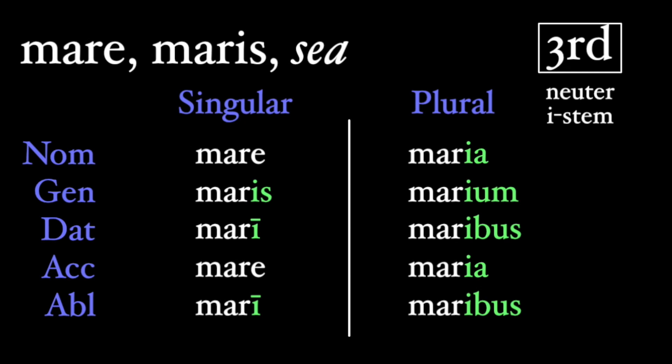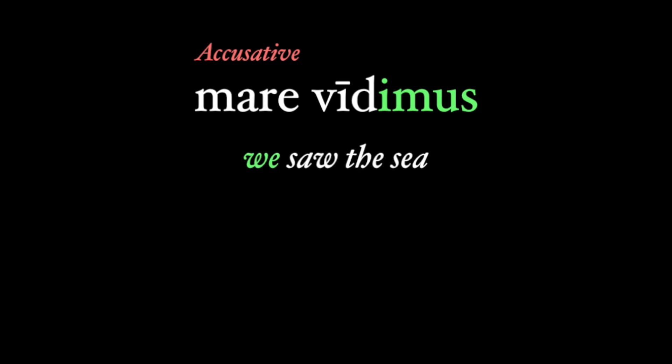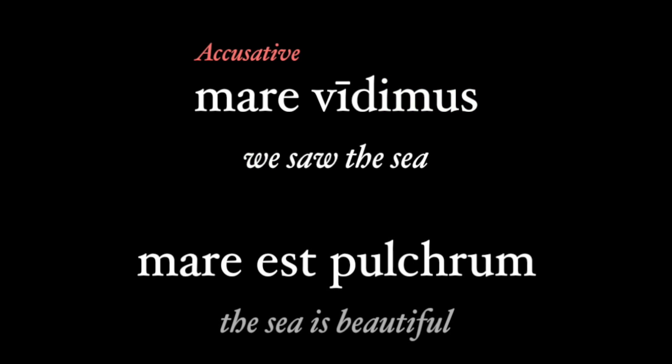Like all neuters, you might have some problems identifying whether the noun is the subject or the object. In the sentence 'mare vidimus,' mare looks so tempting as a nominative, but here it's the accusative, since vidimus is first-person plural — 'we saw the sea.' Mare est pulchrum is also correct, since here mare is nominative.